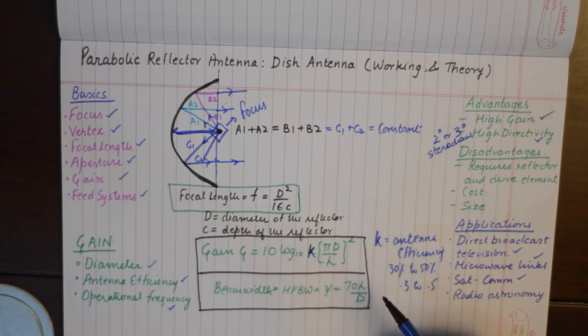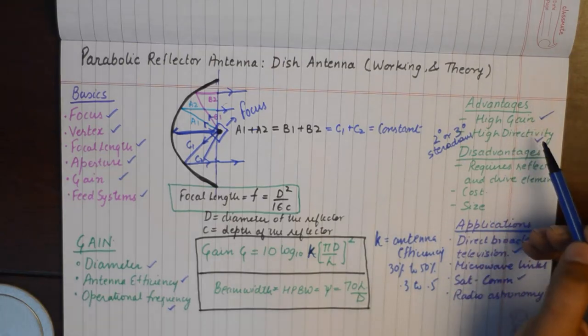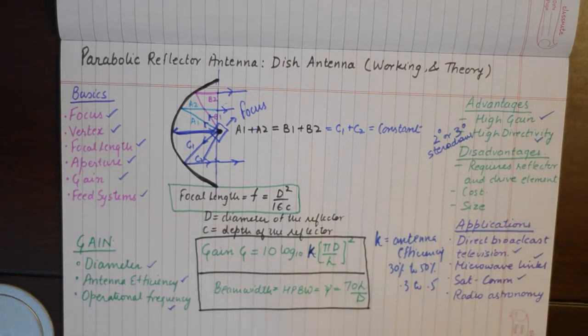Finally, the high directivity of this antenna is attributed to the formula of its half power beam width, which can be represented by phi and has a formula of 70 lambda divided by D.